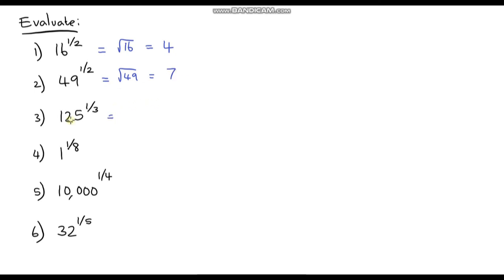The third question: we're raising to the third power, so we take the cube root of 125. Some number multiplied by itself three times gives 125 — that number is 5, because 5 times 5 is 25, and 25 times 5 is 125.